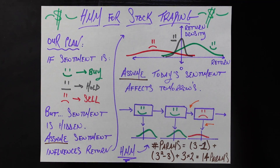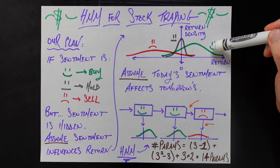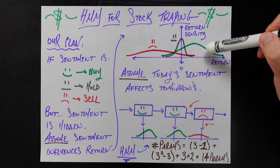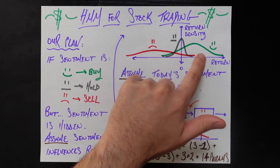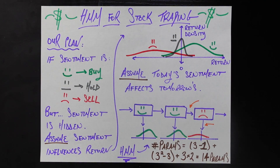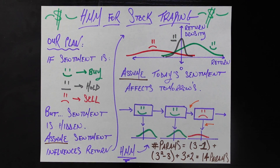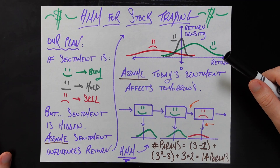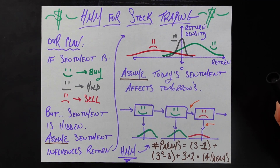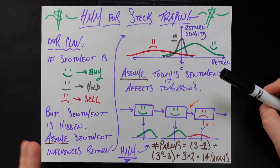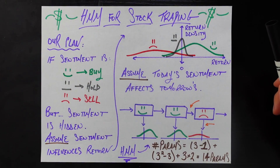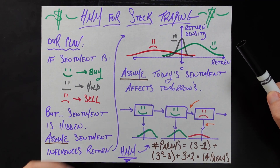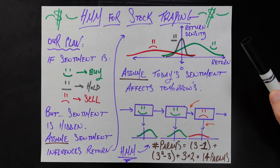How that manifests in the model: if sentiment is positive, the return distribution is the green one centered above zero. If sentiment is negative, it's the red distribution centered below zero. If sentiment is neutral, we have the gray distribution centered pretty much at zero. One thing I tried to capture is that the standard deviations — or volatilities — of these distributions can be very different, and that's baked into the model. So given the sentiment, we assume three classes, each with a normal distribution of returns whose mean and standard deviation are determined by that sentiment.